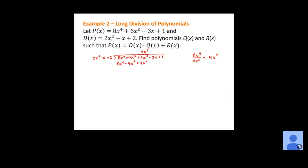Next step: subtract. 8x to the fourth minus 8x to the fourth is zero. Subtracting a negative 4x cubed becomes positive 4x cubed. And 6x squared minus 8x squared gives us negative 2x squared. Then we bring down the next term, which is minus 3x.